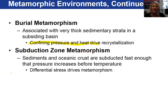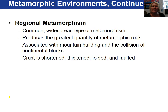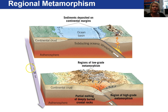In subduction zone metamorphism, the sediments and ocean crust get subducted fast enough that pressure increases before temperature. Differential stress is a key player in subduction zone metamorphism. Regional metamorphism is the most common and widespread type of metamorphism and is associated with mountain building. The crust gets shortened and thickened, folded and faulted. We have an ocean basin being subducted beneath a continent, and eventually continent-continent collision occurs with great differential stresses, creating metamorphic rocks and mountain building.